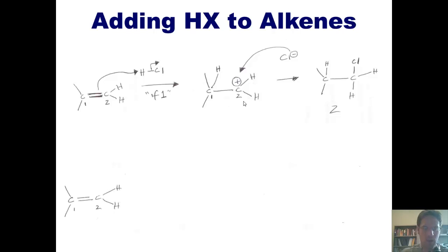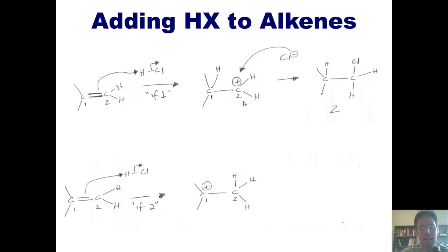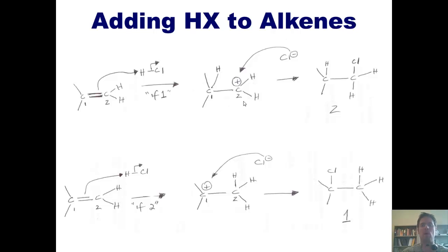In contrast, if we have our same alkene and the pi electrons come out and attack the hydrogen, breaking the hydrogen-chlorine bond, but instead the hydrogen attaches and forms a bond with carbon-2, then the positive charge ends up on carbon-1. The chloride then comes in, forms a bond with carbon-1, plugs that hole, and gives me product-1.